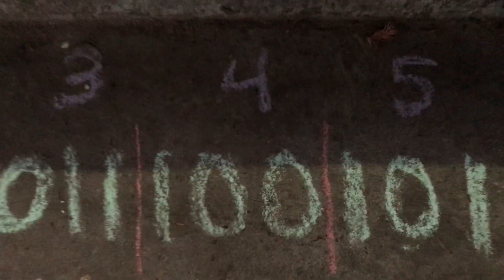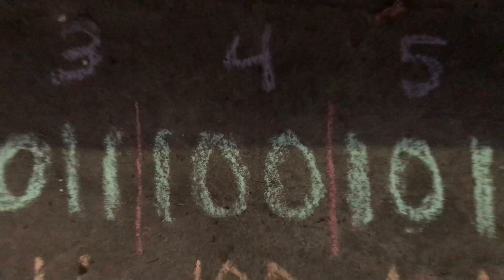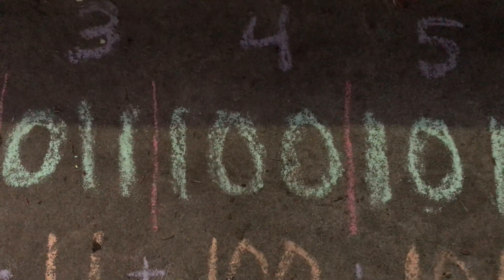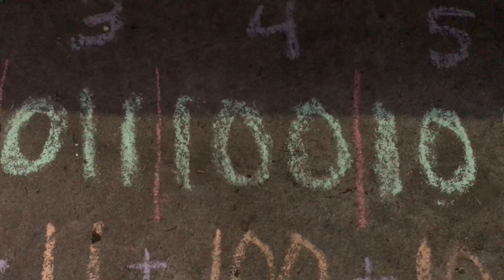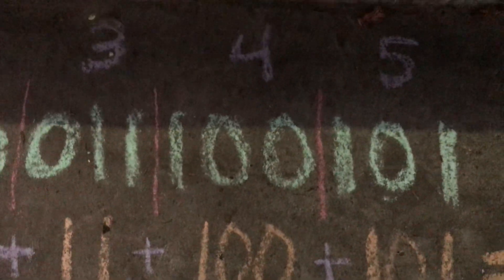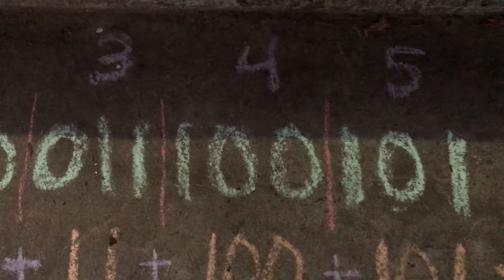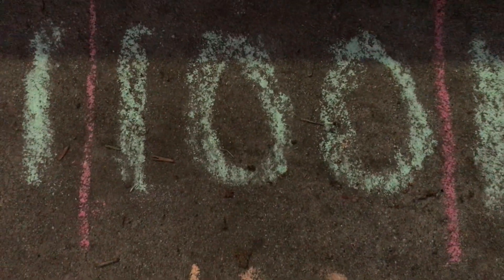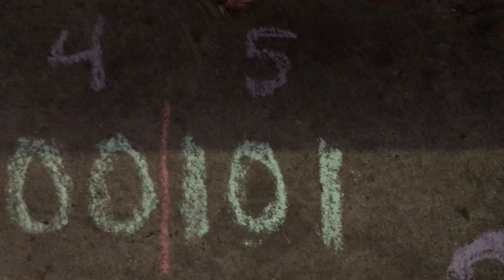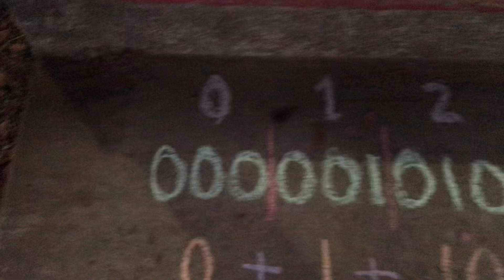0-1-1 represents 3. 1-0-0 represents 4. Because always remember, if your base system is 2 and you square it, you're going to get 1 with 2 place-keepers after it. So even if it's a base system of 10 and you square it, you get the same pattern. In binary, 1-0-0 represents 4. Then you have 1-0-1, so we have a base-5 value going on here.